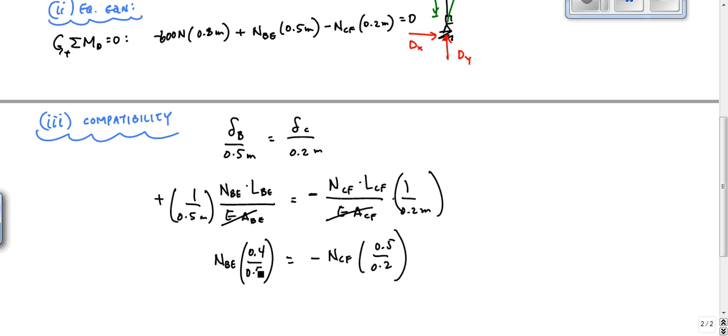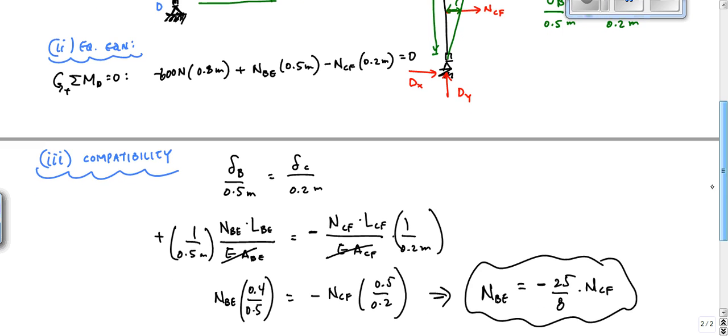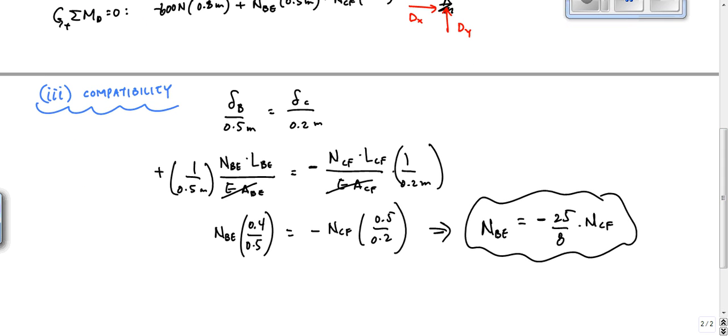0.5. And can someone give me an equation result for this in terms of some one number? NBE is equal to some number, negative, anybody? 25 over 8. Yeah, minus 25 over 8 times NCF.